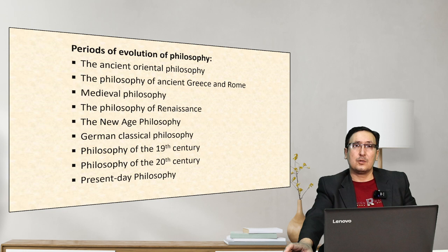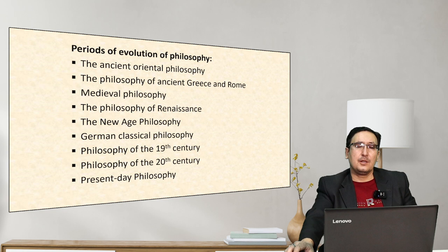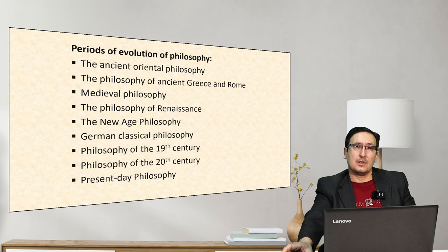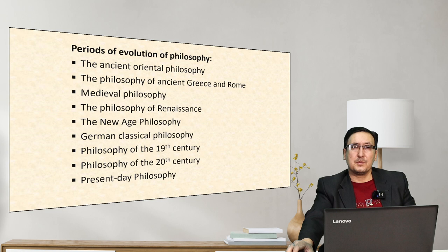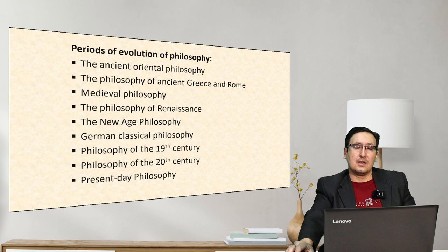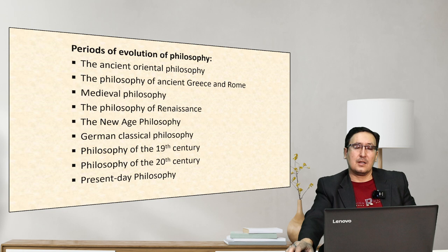Ancient Greek and Roman philosophy is about the development of rationality. Medieval philosophy saw the development of the two world religions — Islam and Christianity. Renaissance philosophy is about the development of arts and anthropocentrism. The new age saw scientific revolutions and great scientists such as Descartes, Spinoza, Leibniz, Newton, Pascal, Mendeleev, and Lomonosov. German classical philosophy addressed classical problems of philosophy, while 19th and 20th century philosophy is connected with technology and philosophy of science.